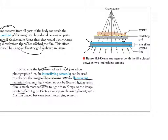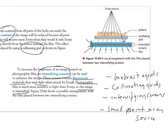So we have contrast agents, collimating grids, intensifying screens, and small point x-ray sources. These are four things that will increase the contrast or sharpness of your image.